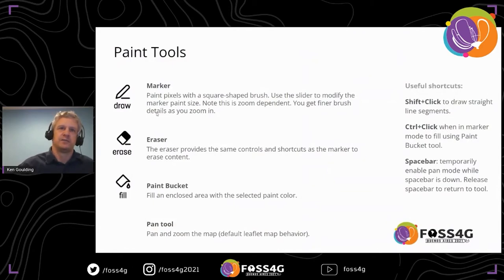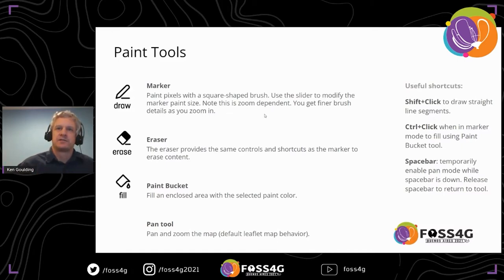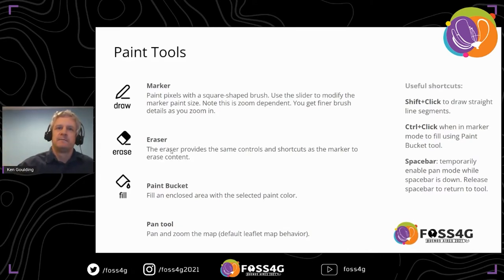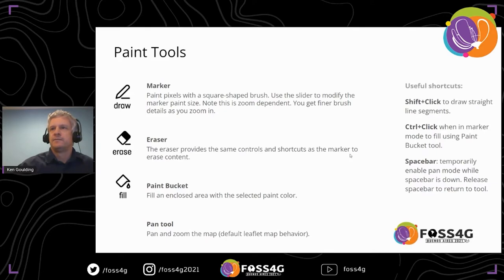The basic tools are: a marker tool that paints pixels — importantly all pixels must be pure colors with no smoothing or anti-aliasing. The brush gets more detailed as you zoom in. There's an eraser tool, a paint bucket for filling closed areas, and the pan tool for standard slippy map behavior. Useful shortcuts: Shift+click draws straight line segments, Ctrl+click fills, and Spacebar lets you pan quickly.